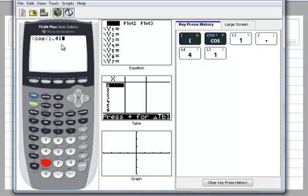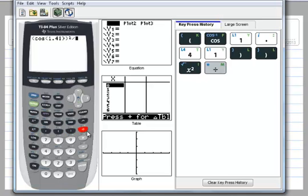Now, notice how it automatically puts that parentheses in there, so I have to close that parentheses. Then I have to close the parentheses again before I square it. And then I can divide by, and then I've got the sine of negative 0.36.